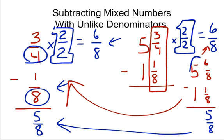5 minus 1, now we're going to take care of the whole number part. 5 minus 1 is 4. And I just rewrote this problem over here so that you could see all of the steps.